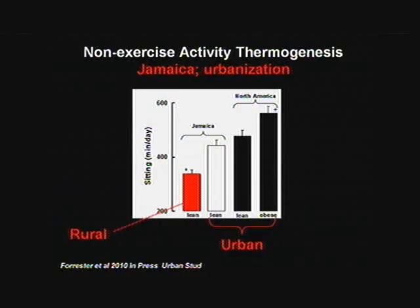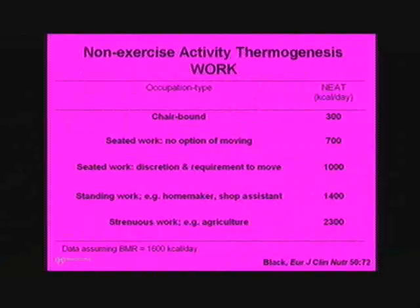If one ponders for a second the implications of modernization, what one calculates is that our NEAT has declined with modernization by 1,000 to 2,000 calories a day. We measured the NEAT in people working in agricultural communities in rural Jamaica, and then followed them into Kingston as they urbanized into factories. Compared to lean and then obese Americans, you see progressively more and more sitting and less and less activity — the so-called sitting disease.